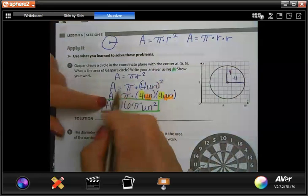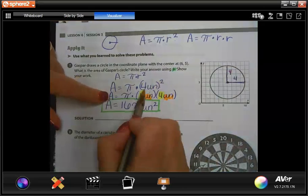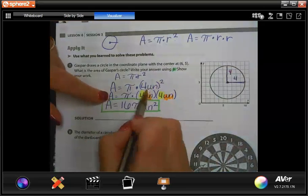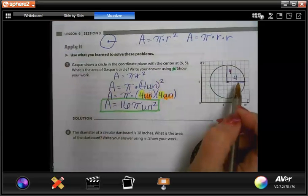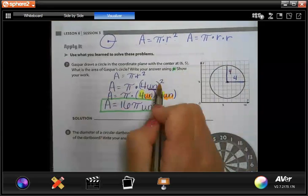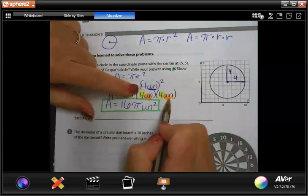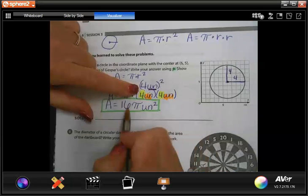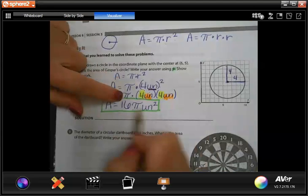So we plug in the value of the radius. So it's pi times radius squared. So it's four units. Units is just because there's no feet or centimeters or millimeters or anything labeled. So we label it as units. Now, if you square this, that's really four units times four units. So four times four is 16. We're gonna leave pi as pi and we're gonna label it units squared.